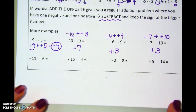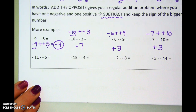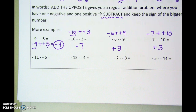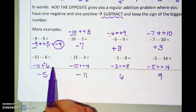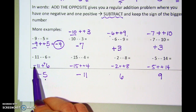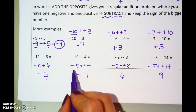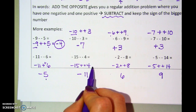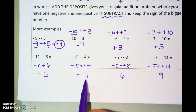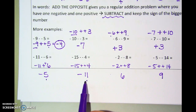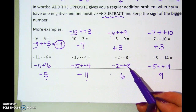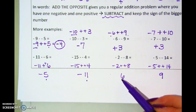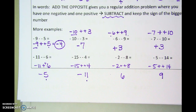You try the next four — take a minute to actually rewrite them with add the opposite, then think it through and find your answer. For the first one, I rewrote it as negative eleven plus positive six — subtract to get five, the negative was bigger, so negative five. Negative fifteen plus positive four — subtract to get eleven, the negative was bigger, so negative eleven. Negative two plus positive eight — the positive is bigger this time, so positive six. And negative five plus fourteen — subtract to get nine, and the positive is bigger, so a positive answer.